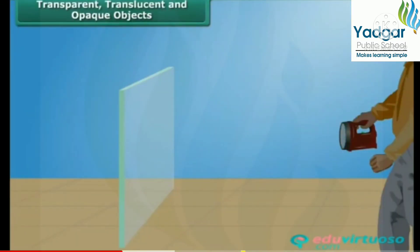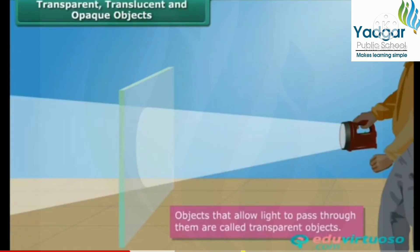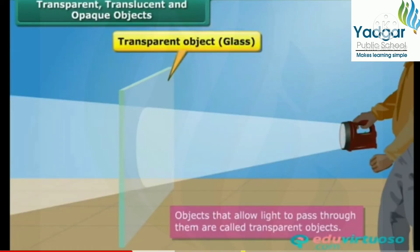Objects are classified as transparent, translucent, or opaque depending upon their treatment of light. Objects that allow light to pass through them are called transparent objects. Most of the light falling upon a transparent object passes through it to the other side, thereby allowing us to see through them. Glass, clean air, pure water, etc. are examples of transparent objects.